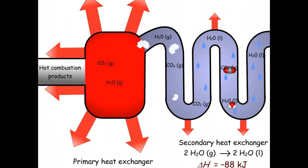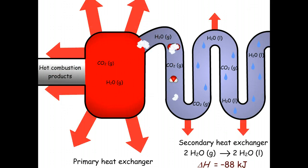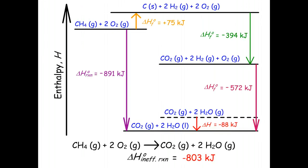The difference in delta H between the efficient and inefficient reactions is equal to the enthalpy change of the condensation of the two moles of water, negative 88 kilojoules. The condensation reaction adds over 10% to the heat energy yield of the efficient furnace.